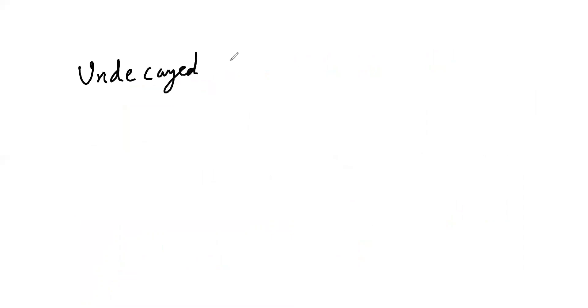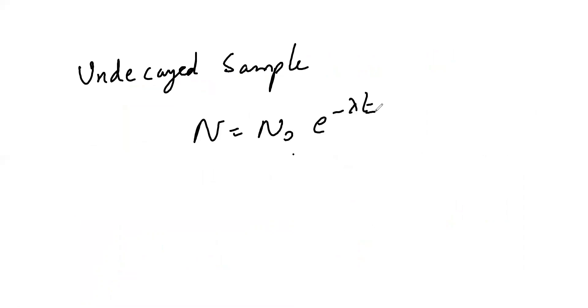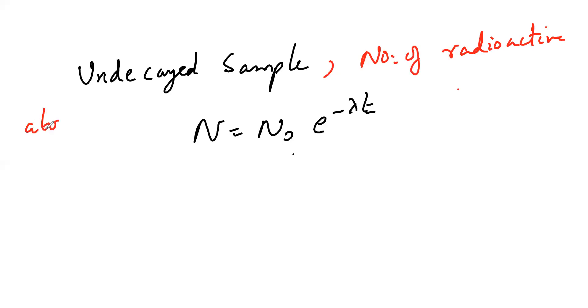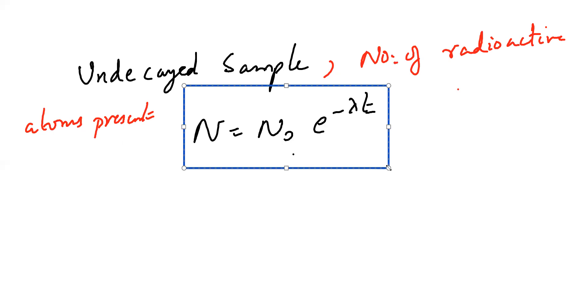For an undecayed sample, according to this law, it will be n = n₀ e^(−λt). Here, for an undecayed sample, this gives the number of radioactive atoms present. At time t = 0, n = n₀.